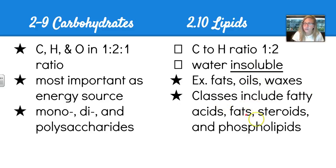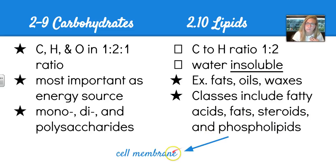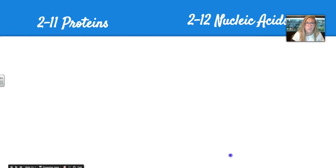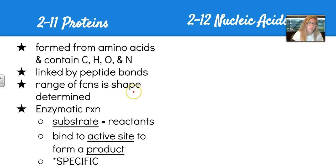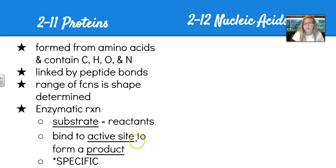Lipid classes include fatty acids, fats, steroids, and phospholipids — and phospholipids are probably the most important to us because they make up our cell membranes. Section 2.11 covers proteins, which are formed from amino acids and contain carbon, hydrogen, oxygen, and nitrogen, linked by peptide bonds. They have a very large range of function determined by their shape. They act as biological catalysts, help with enzymatic reactions, and the substrate — usually the reactant — binds to an active site to form a very specific product.